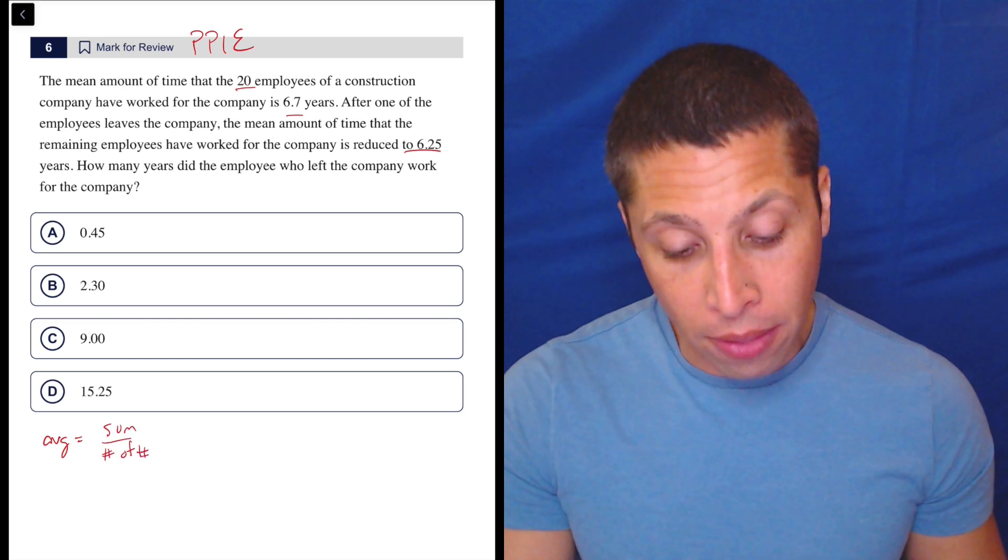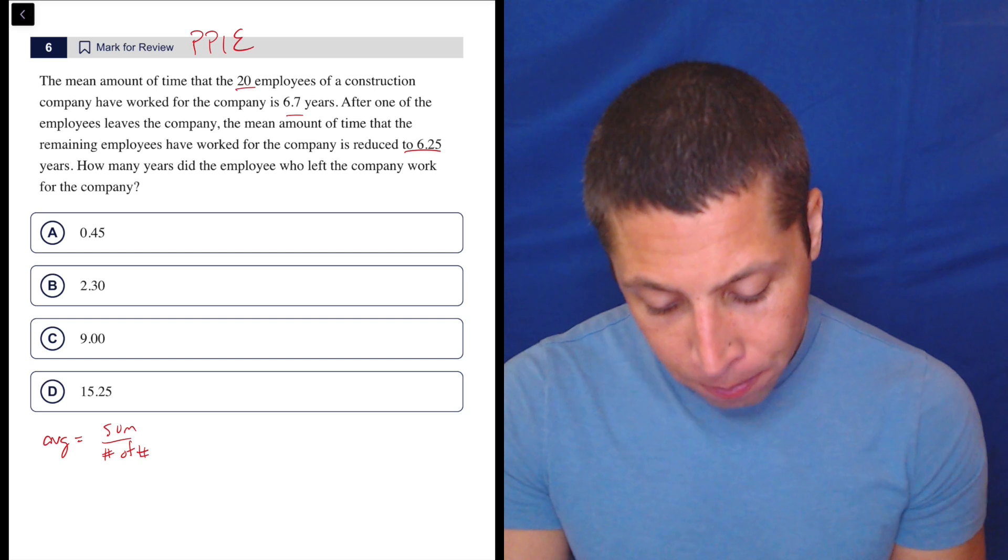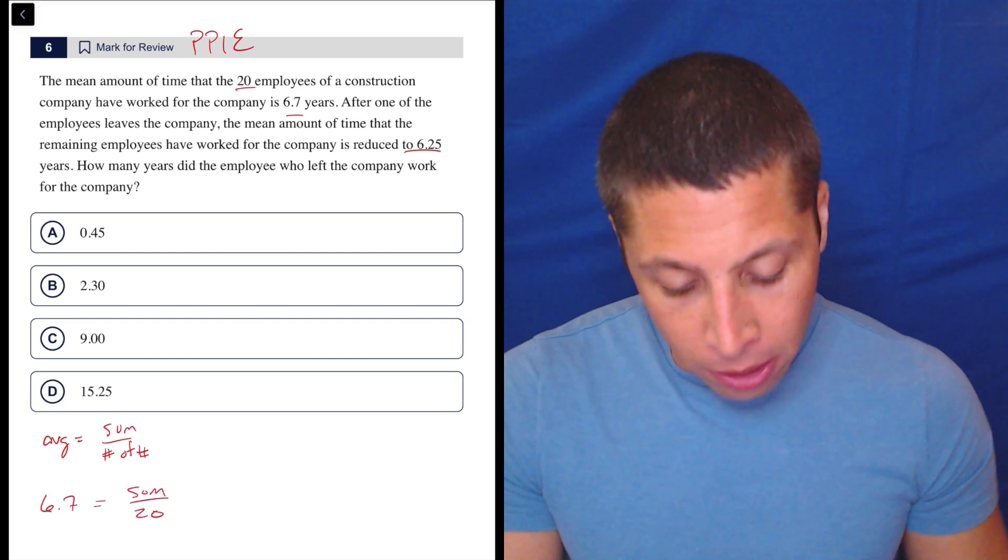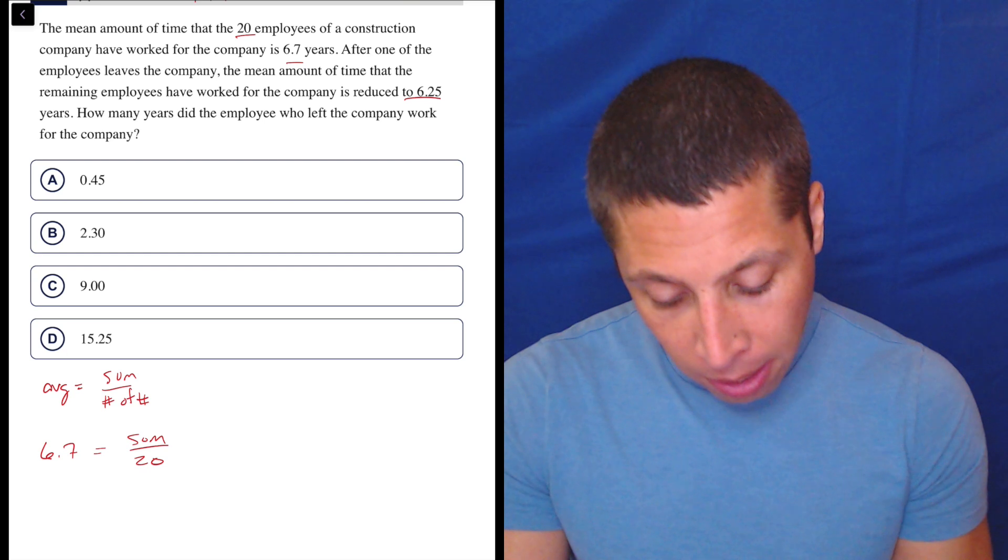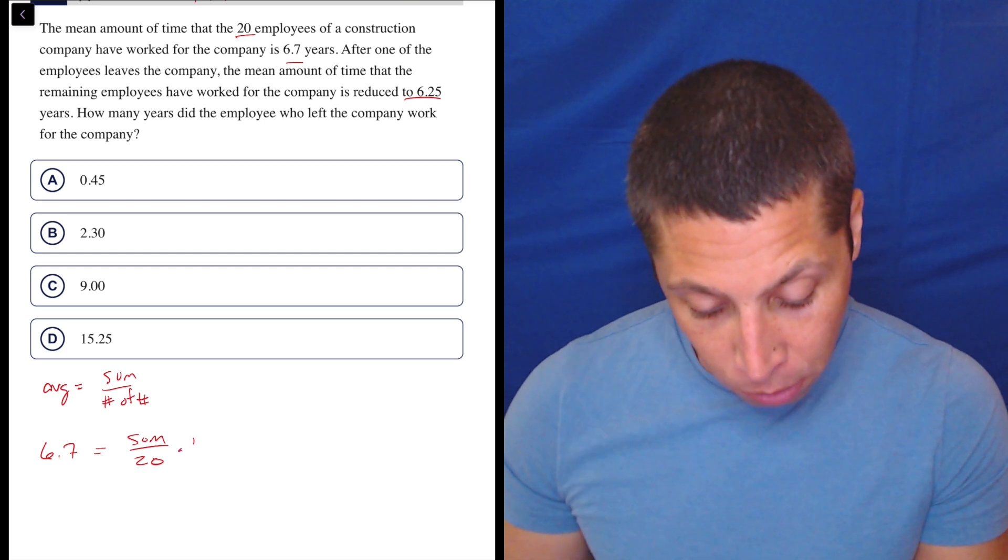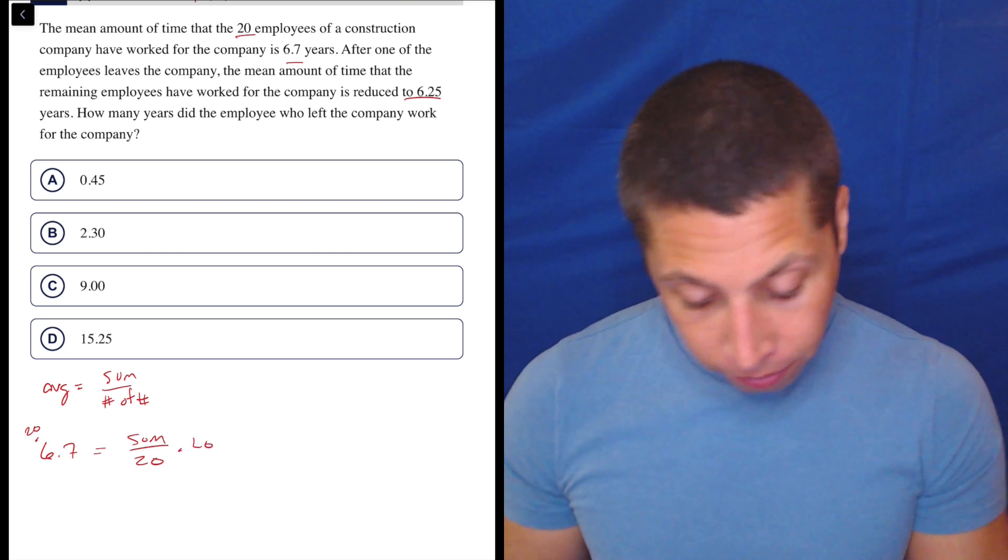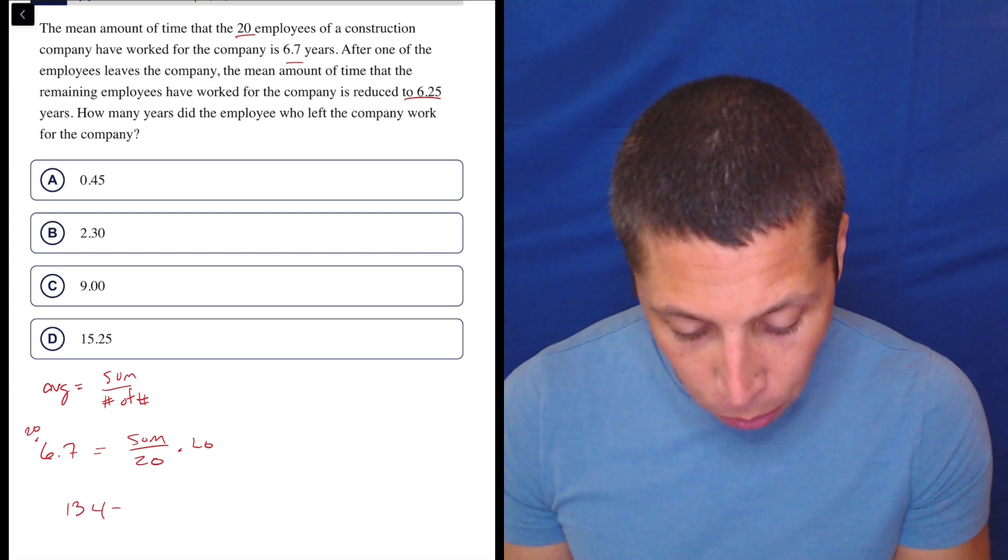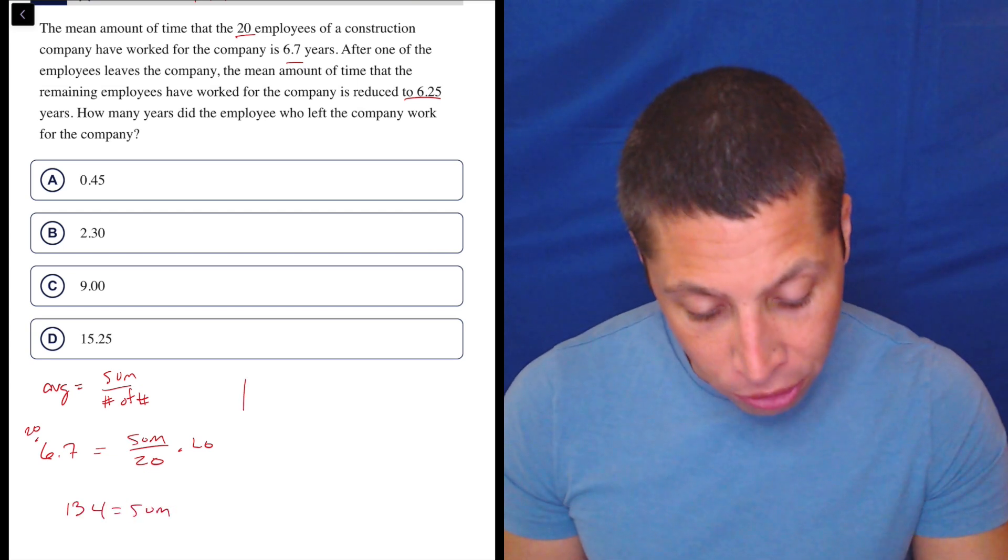Don't think too hard about this. We have the mean being 6.7 for a total of 20 people. So without thinking too hard, I'm going to find that sum by multiplying by 20. So times 20 times 20. So 6.7 times 20 is 134. That's my sum of the original set.